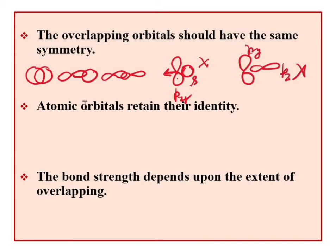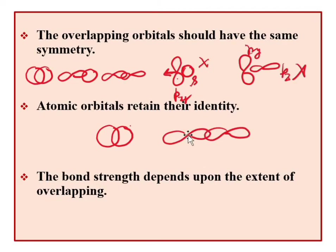The next postulate: atomic orbitals, when they overlap, retain their identity. After overlap, the atomic orbitals maintain the same shape they had before. P-orbitals overlapping remain p-orbitals in terms of shape. The atomic orbitals retain their individuality even after overlapping.